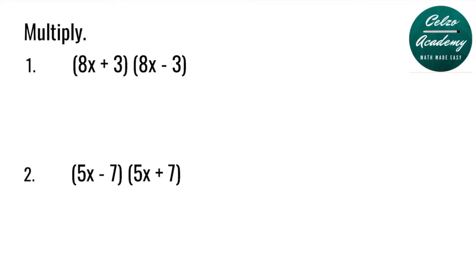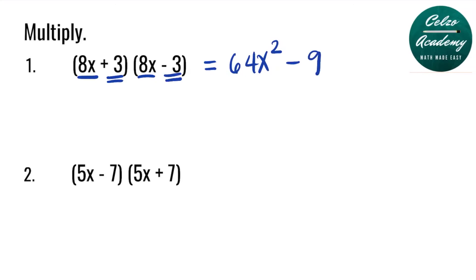Question number 1: multiply (8x + 3) and (8x − 3). These examples are products of sum and difference — the binomials are the same and one is a plus while the other is a minus. Step 1 is to multiply the first terms 8x and 8x, which is 64x squared. Step 2 is to multiply the second terms 3 and negative 3, which is minus 9. So the answer for question 1 is 64x squared minus 9.